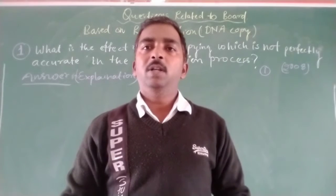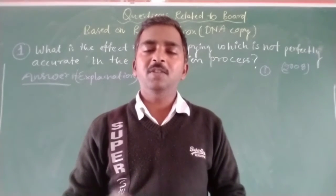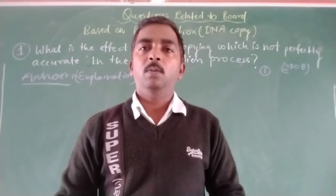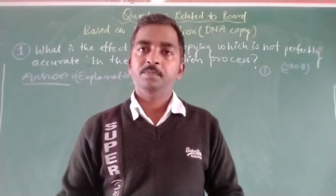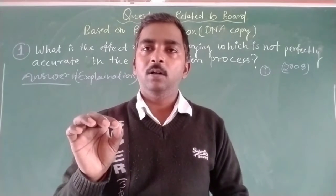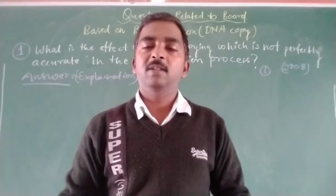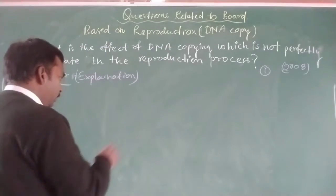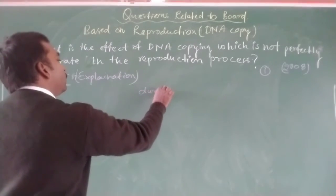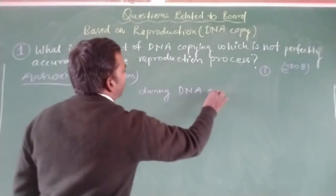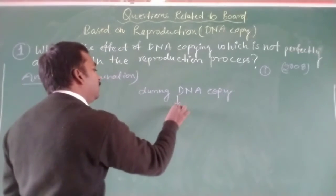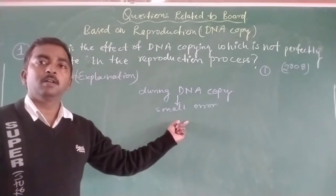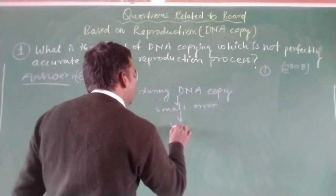In our previous video lecture we discussed that each chemical reaction during the process of DNA copy may not be absolutely reliable. This means a small amount of error occurs each time for each chemical reaction during DNA copy, and that small error leads to variation.